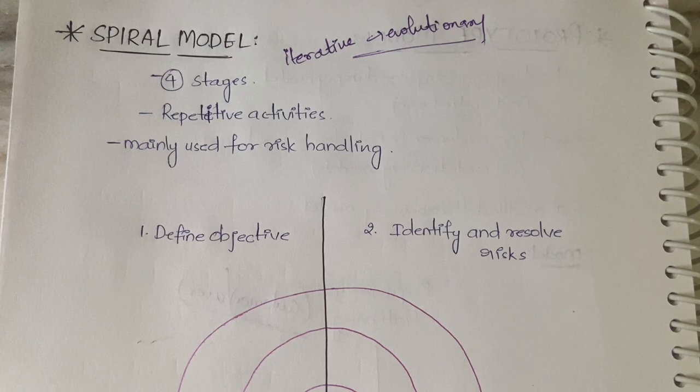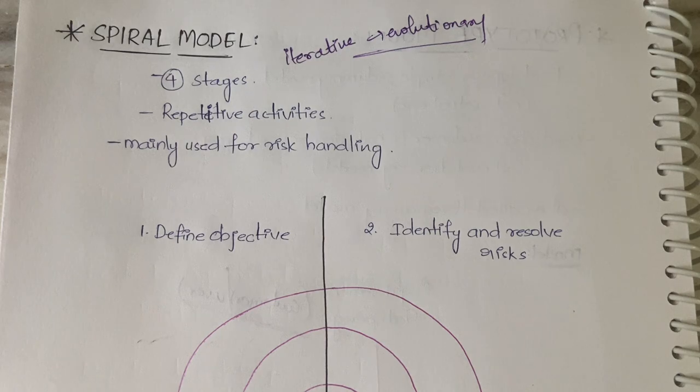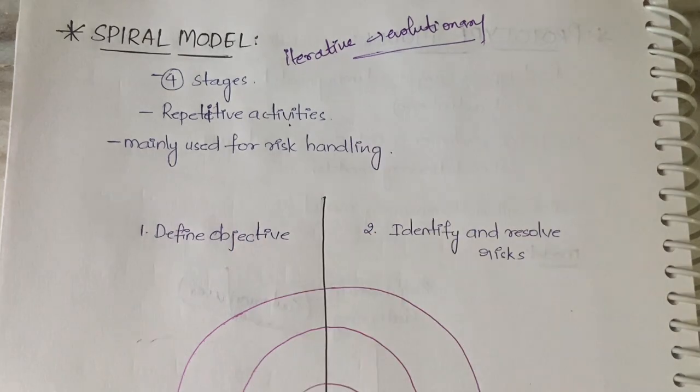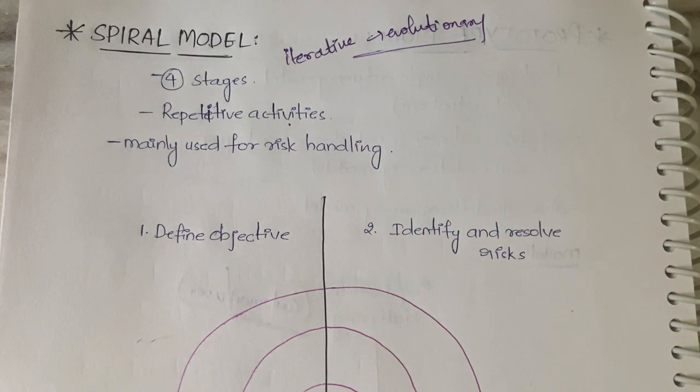It never ends - I mean, it ends when you want it to end. All the repetitive activities will be done, that is, each and every activity will be repeated multiple times until the customer is satisfied. It is mainly used in case of risk handling, or you can simply say in cases where handling risks is very important or where more risks are probable to happen. In those cases, you can use the spiral model.